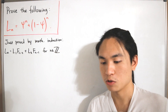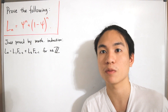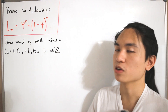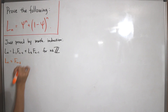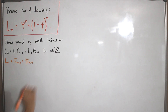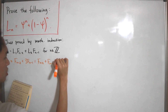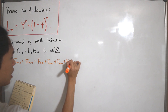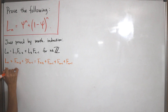Using L_1 = 1 and L_2 = 3, we substitute into the formula: L_n = F_{n-2} + 3 · F_{n-1}. Expanding: L_n = F_{n-2} + F_{n-1} + F_{n-1} + F_{n-1}.